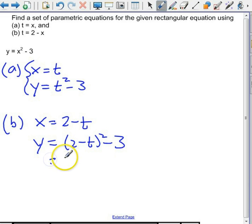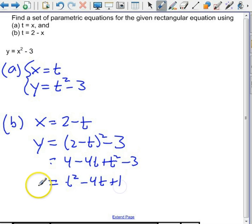And if you want, you can multiply that out. 4 minus 4t plus t squared minus 3. And we get t squared minus 4t plus 1. So that's our y in terms of t and our x in terms of t.